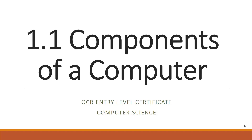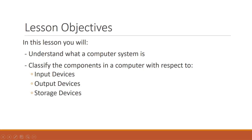Welcome to my video tutorial series for the OCR Entry Level Certificates in Computer Science. This is the first lesson covering content for Test 1 and looks at the components of a computer system. In this lesson, it is my aim to help you understand what a computer system is and to be able to classify components in a computer with respect to input, output and storage devices. Let's begin.